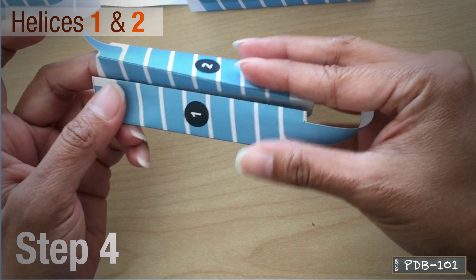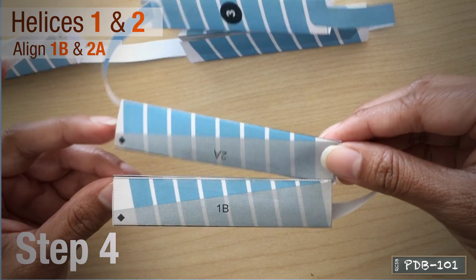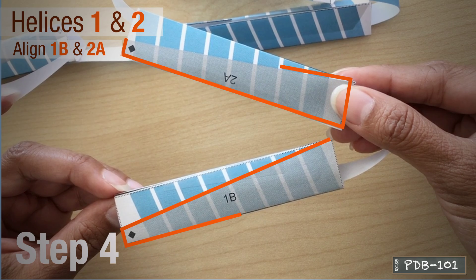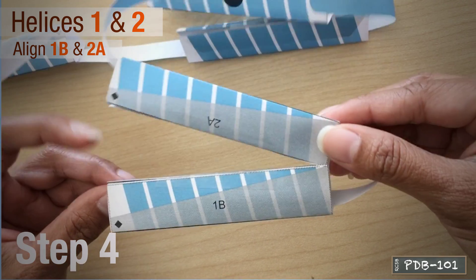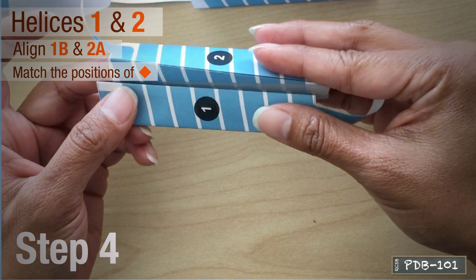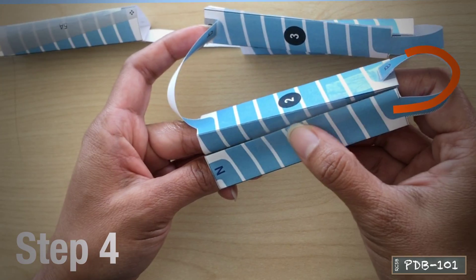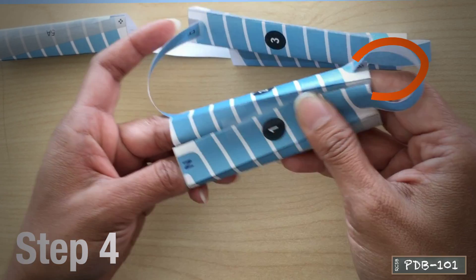Connect helices 1 and 2 by aligning the semi-transparent gray area marked 1B with the semi-transparent gray area marked 2A, matching the position of the diamond symbols and taping them together. Notice the first intracellular loop forming.